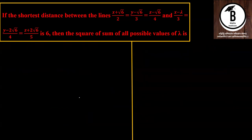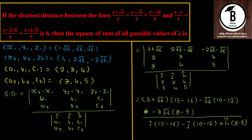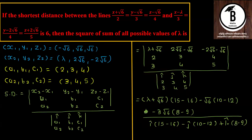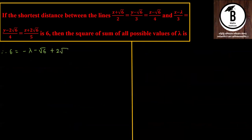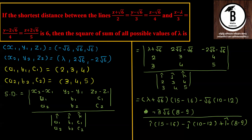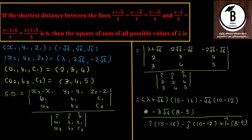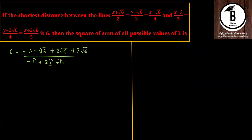The shortest distance is given as 6. After computing, the numerator simplifies. Multiplying through by −1, we get: −λ − √6 in one term, then 3√6 in another. The denominator vector is −i + 2j − k, so its magnitude is √(1 + 4 + 1) = √6.